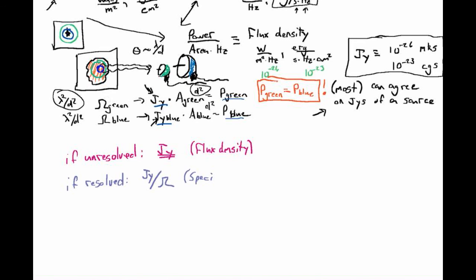And this is called specific intensity, often denoted with an I. This is energy divided by every possible unit you could imagine: it's divided by seconds, by hertz, by collecting area, and by angular area — called radians, which is an angle squared. So for resolved sources, everybody can agree on the specific intensity.